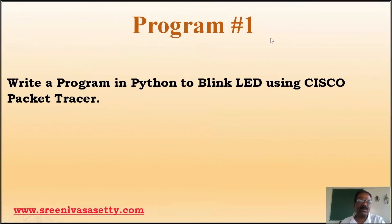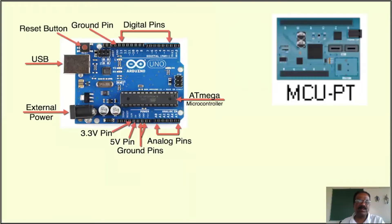In this lecture, I'm going to write a program in Python to blink an LED using Cisco Packet Tracer. I'm going to use two important components. One is called a microcontroller. I'm not using a physical board — I'm going to use the virtual app called Cisco Packet Tracer. In Cisco Packet Tracer, we can find the micro control unit.